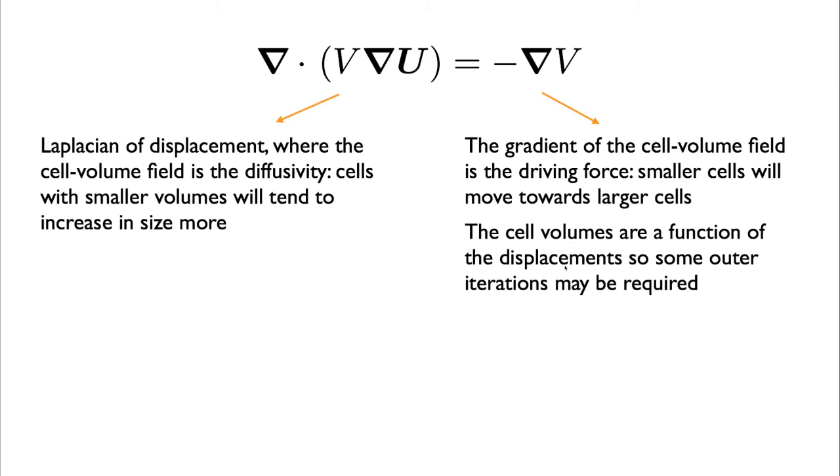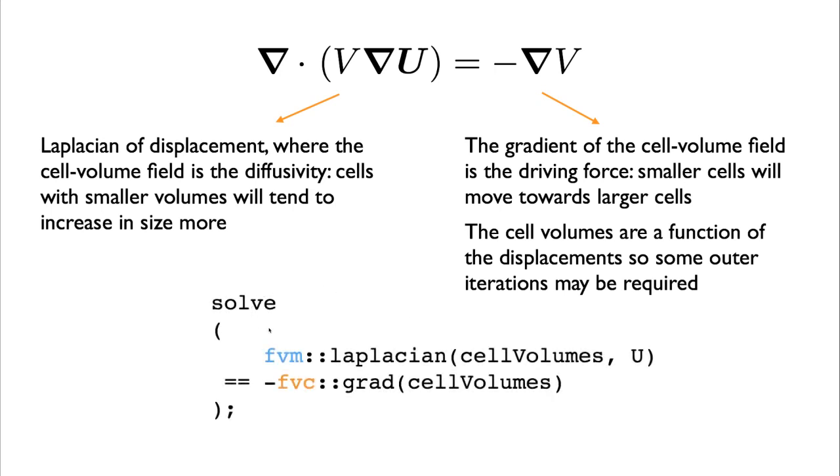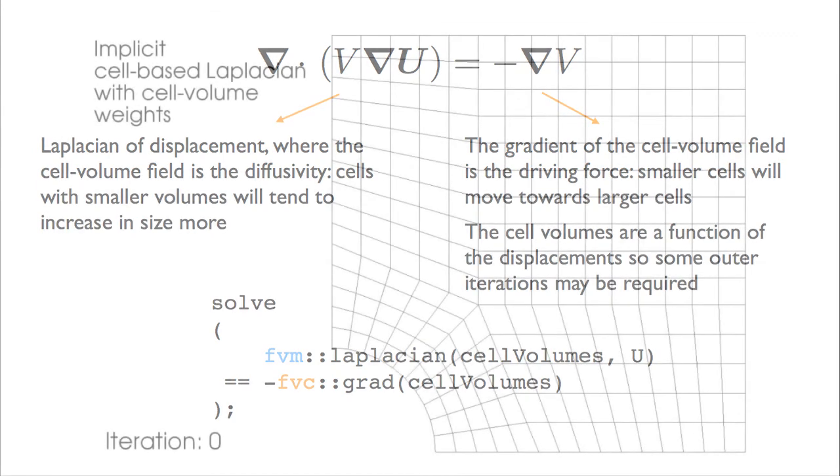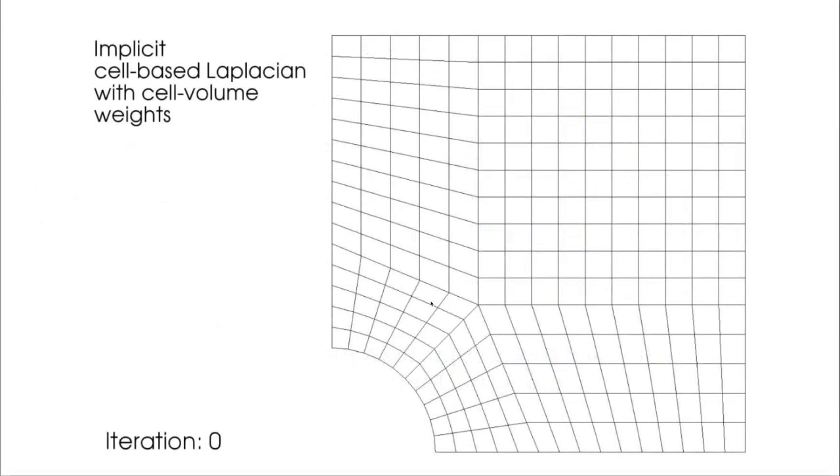As a starting simple linearization, we can just perform an iteration over this where we update the cell volumes each time. To implement this in OpenFOAM, we can just write like this, implicit Laplacian cell volumes by displacement is equal to explicit minus an explicit gradient cell volumes, and we can perform an outer iteration where we update the cell volumes.